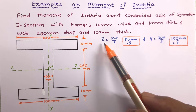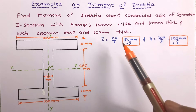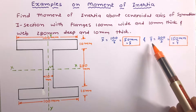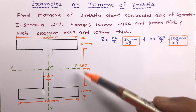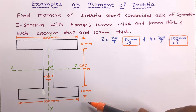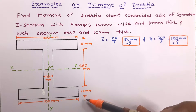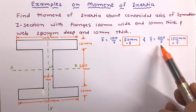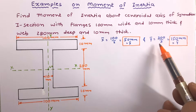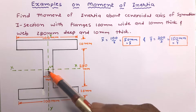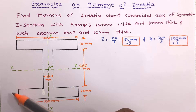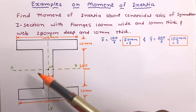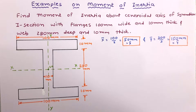x̄ is the total dimension of the figure along the X-axis divided by 2, which is 100 / 2 = 50 mm. ȳ is the total dimension along the Y-axis divided by 2. The total dimension along Y is 280 + 10 + 10 = 300 mm, so ȳ = 150 mm. The centroid is therefore at 150 mm from the reference X-axis and 50 mm from the reference Y-axis.